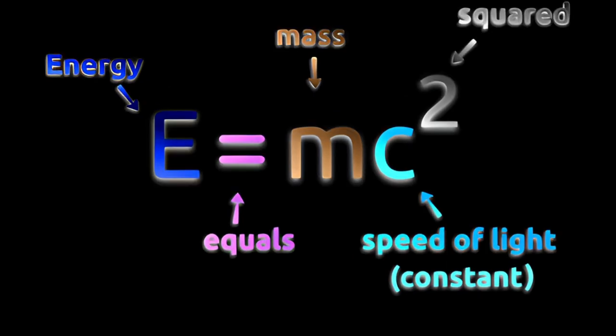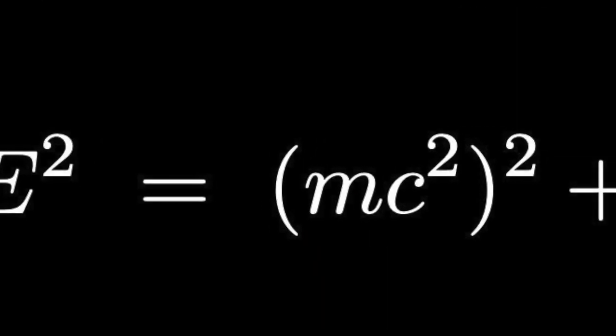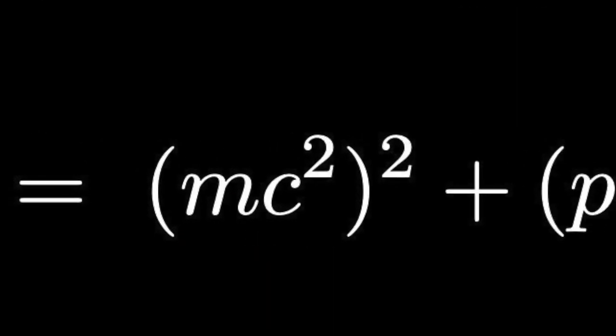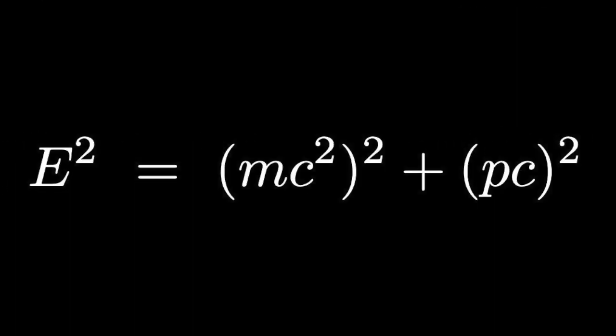This is a simplified version of the real equation. E squared equals mc squared squared plus pc squared. This equation tells us that the total energy of a particle is not just due to its mass, but also its momentum.